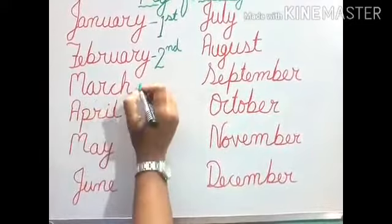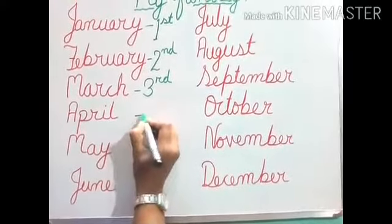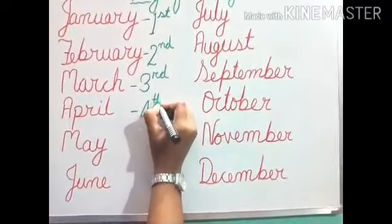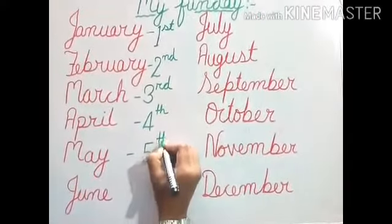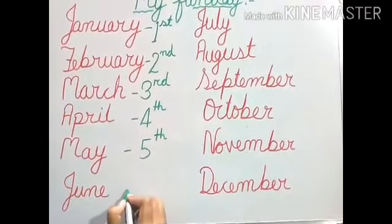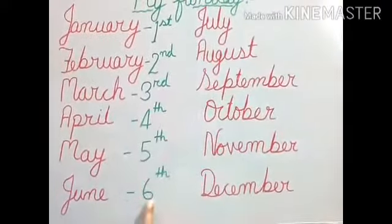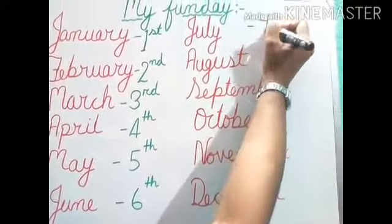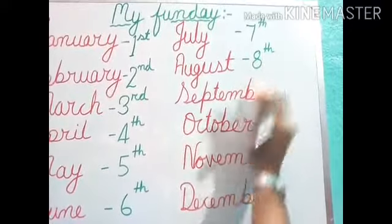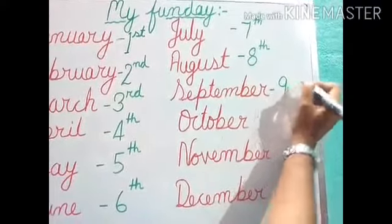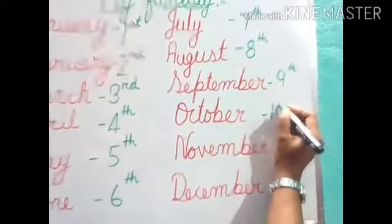March is the third month of the year. April is the fourth month of the year. May is the fifth month of the year. June is the sixth month of the year. July is the seventh month. August is the eighth month. September is the ninth. October is the tenth.